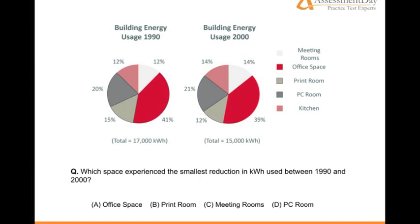Which space experienced the smallest reduction in kilowatt-hours used between 1990 and 2000? We can now see what is being asked. We need to find the difference between the two pie charts in each corresponding sector and determine which one had the smallest reduction in kilowatt-hours. It is very important to determine which information you do not need to use for the given question, or information that is not relevant to the calculation being asked.